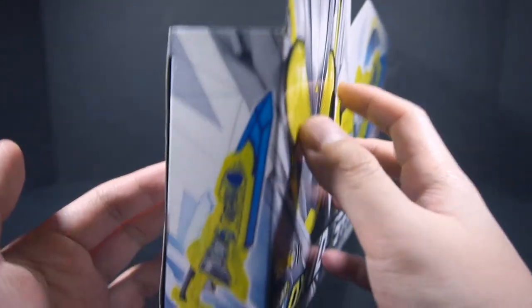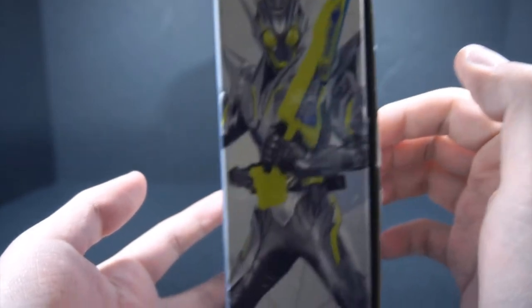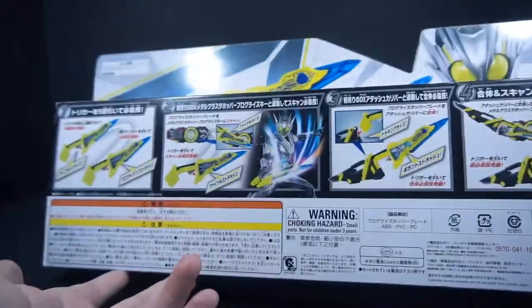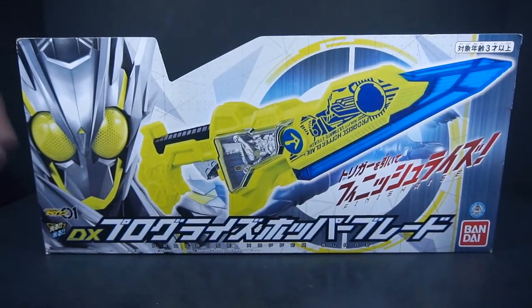As you can see here, Metal Cluster Hopper is present, although for some reason they put them on the left instead of the right because they love inconsistencies. The box is really thin and I can't really show this because I'm not backing out. There's Zero-One with the Progrise Hopper Blade which is definitely bigger than this toy. The bottom shows all the functions, so we're just stuck with CGI renderings of Metal Cluster because what are even real suits?